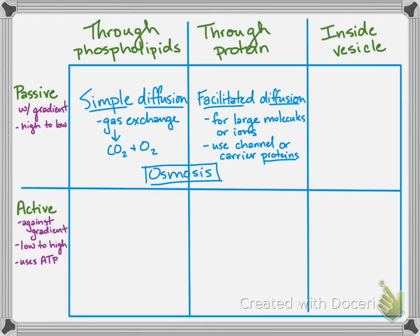Osmosis is the diffusion of water. There are aquaporins — proteins that allow water to pass through the cell membrane very easily — but sometimes water is actually small enough that, even though it is polar with a slight negative and positive end, it can sneak through those fatty acid tails and enter straight through the phospholipids. Osmosis is a type of simple diffusion; it is specifically the diffusion of water.